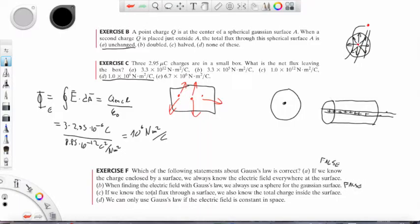C. If we know the total flux through a surface, we also know the total charge inside the surface. So if we know the total flux, we know the total charge. This is true.